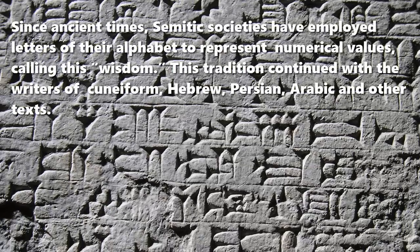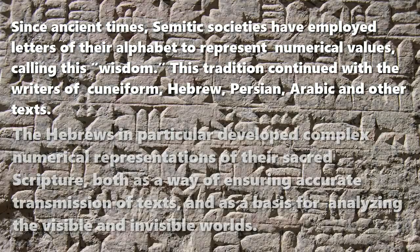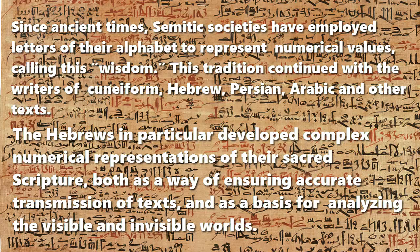Since ancient times, Semitic societies have employed letters of their alphabet to represent numerical values, calling this wisdom. This tradition continued with the writers of Cuneiform, Hebrew, Persian, Arabic, and other texts. The Hebrews in particular developed complex numerical representations of their sacred scripture, both as a way of ensuring accurate transmission of texts and as a basis for analyzing the visible and invisible worlds.